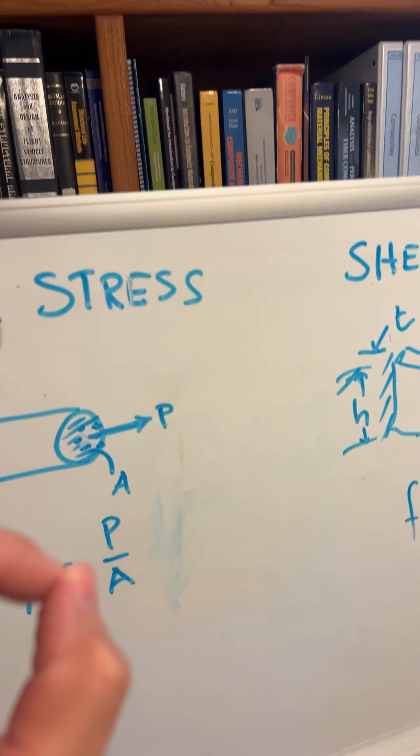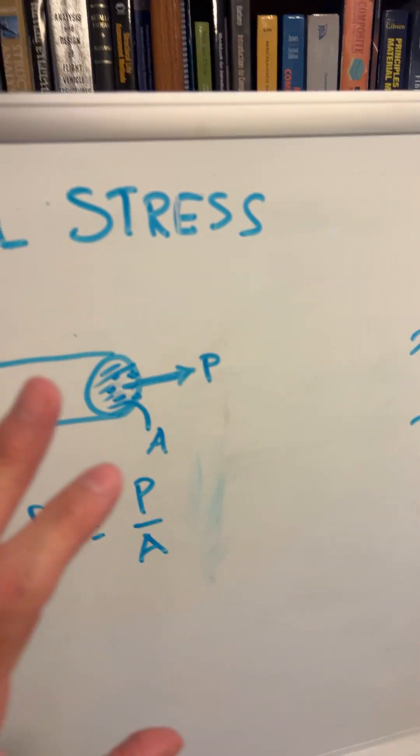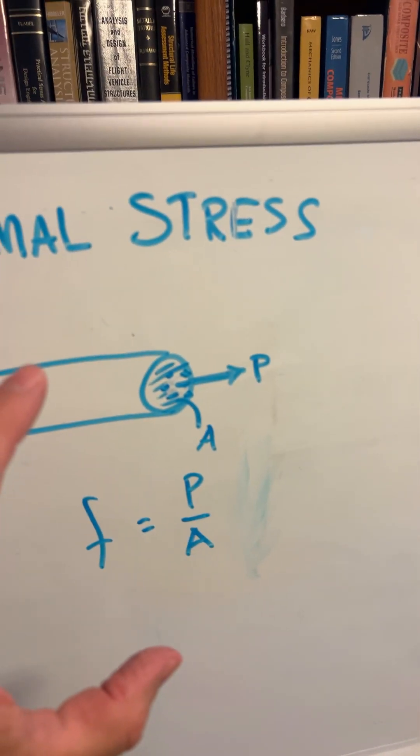That word normal means perpendicular, so our normal stress is not less abnormal. It just is perpendicular. That's a normal stress.